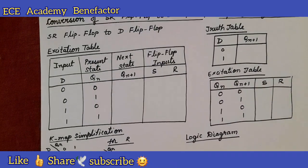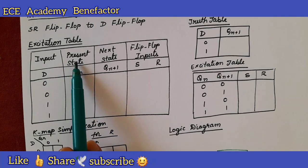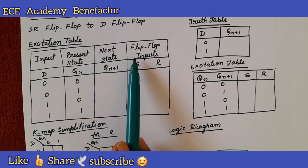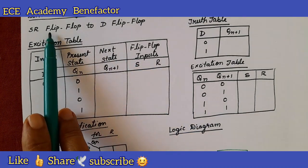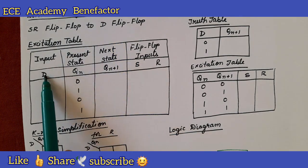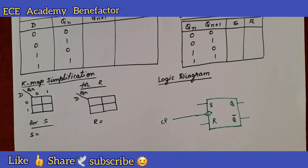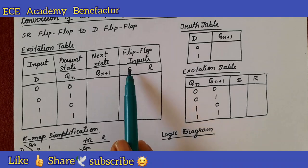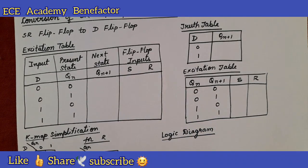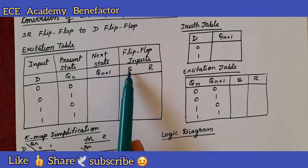In the excitation table we need four columns: input, present state, next state, and flip flop inputs. Since we are converting SR to D flip flop, the input here is D. We are writing input D, present state is Q_n, next state is Q_{n+1}, and the flip flop inputs are S and R.